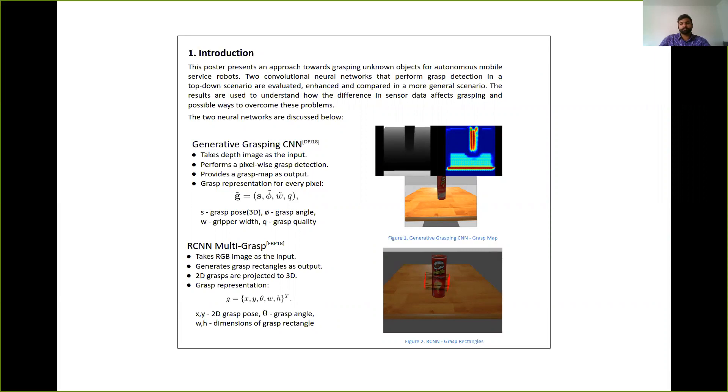The 3D grasp pose, the grasp angle, the gripper width and the grasp quality. So the visualization of the grasp map that is seen in the image is based on the grasp quality parameter. And the red pixels denote the grasps with highest quality and the blue pixels denote grasps with lower quality.